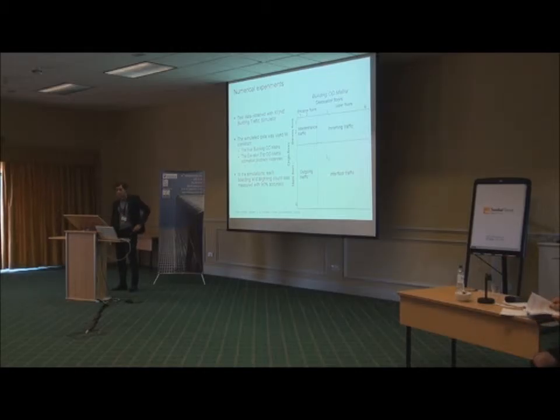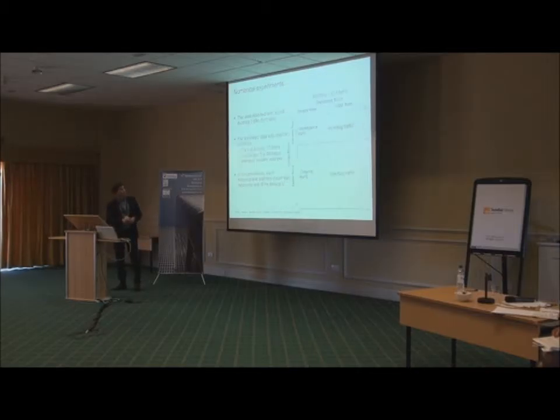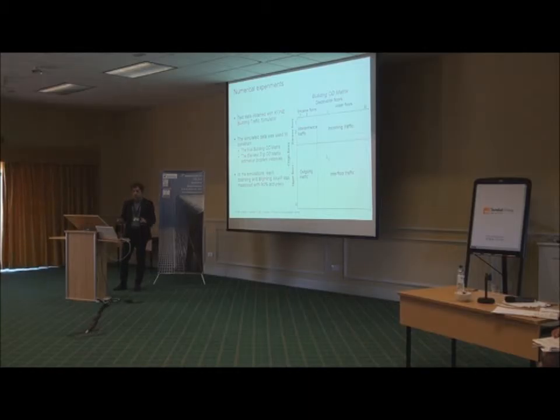To study the approach and these algorithms' performance, we generated some test data with a building traffic simulator. This data was used to construct a true building origin destination matrix for each simulation. Here's an example. Each element in this matrix corresponds to the true number of passengers from an origin floor to a destination floor. The nice thing about this is that we have the traditional traffic components there. We can define inter-floor traffic, and we can make different tenants. They travel differently in the building, so we get much more detailed information from the traffic in the building.